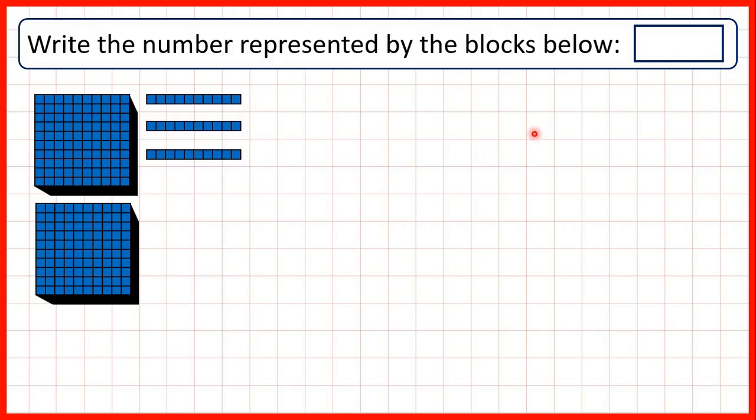Here we have two thousands. We don't have any hundreds, so we need to write a zero as our hundreds digit. We have three tens. And we don't have any ones, so we need to write another zero to make the number two thousand and thirty.